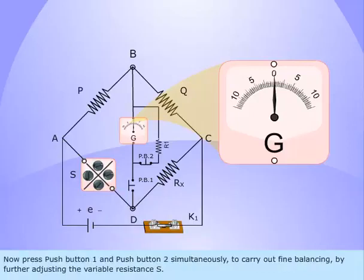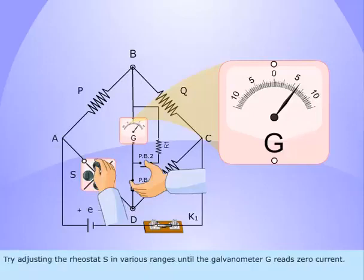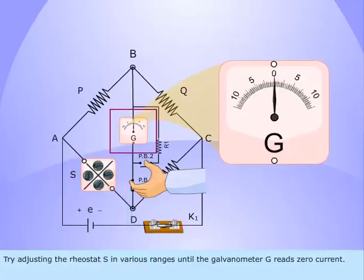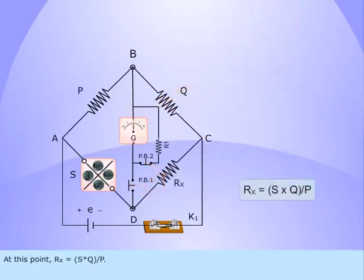Now press push button 1 and push button 2 simultaneously to carry out fine balancing by further adjusting the variable resistance S. Try adjusting the rheostat S in various ranges until the galvanometer G reads 0 current. At this point, Rx equals S times Q by P.